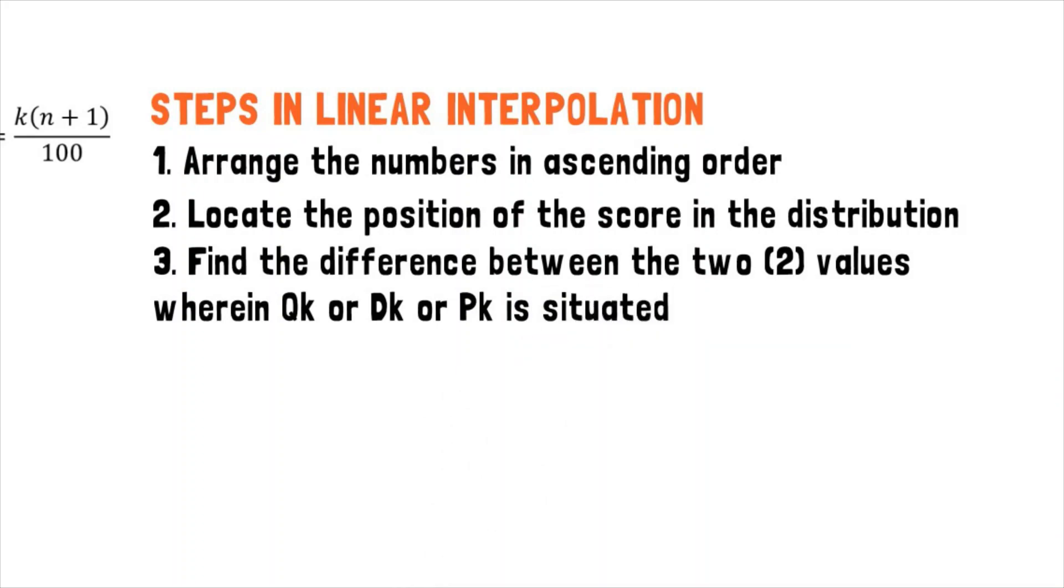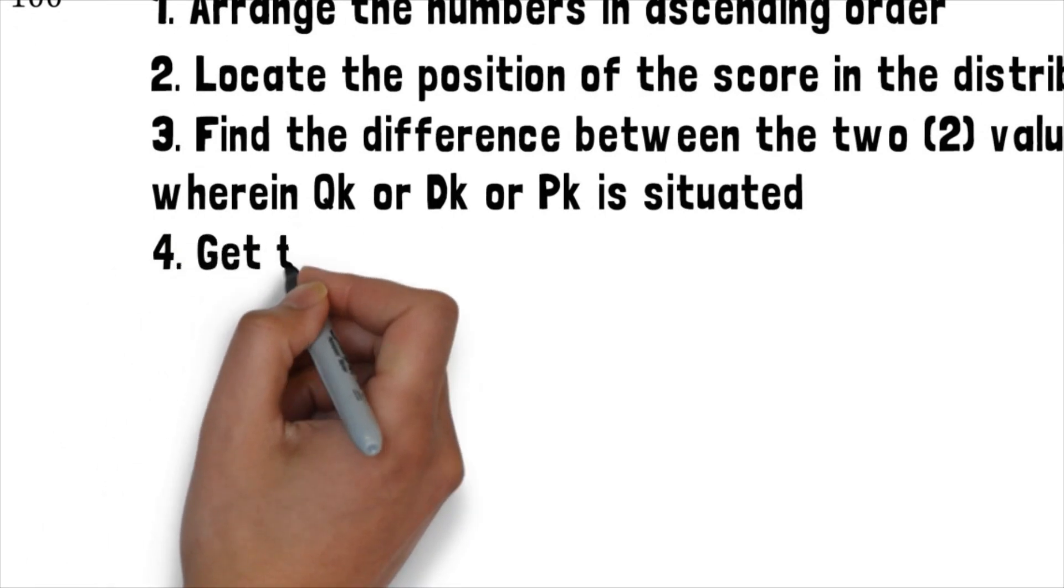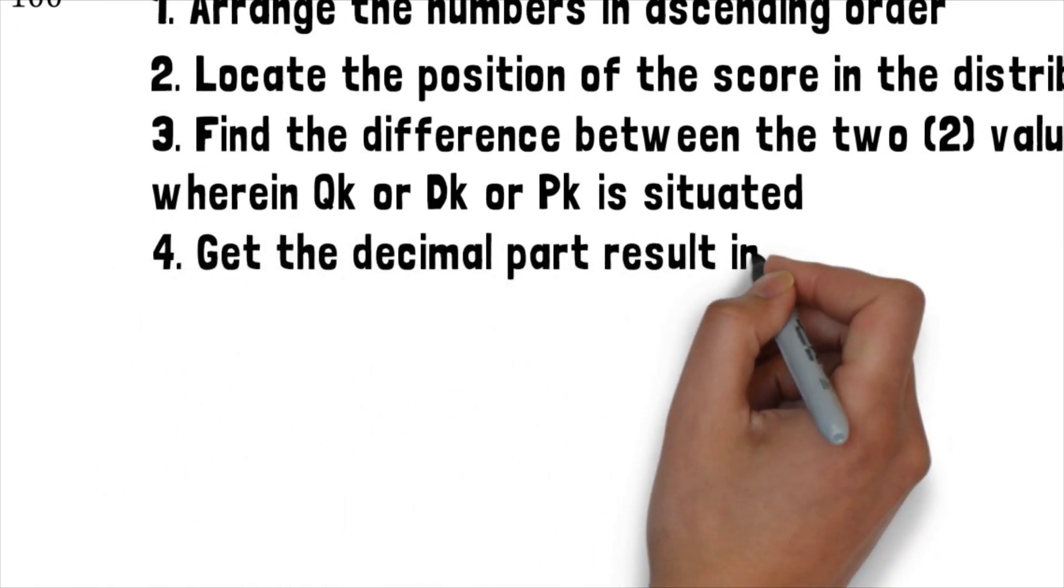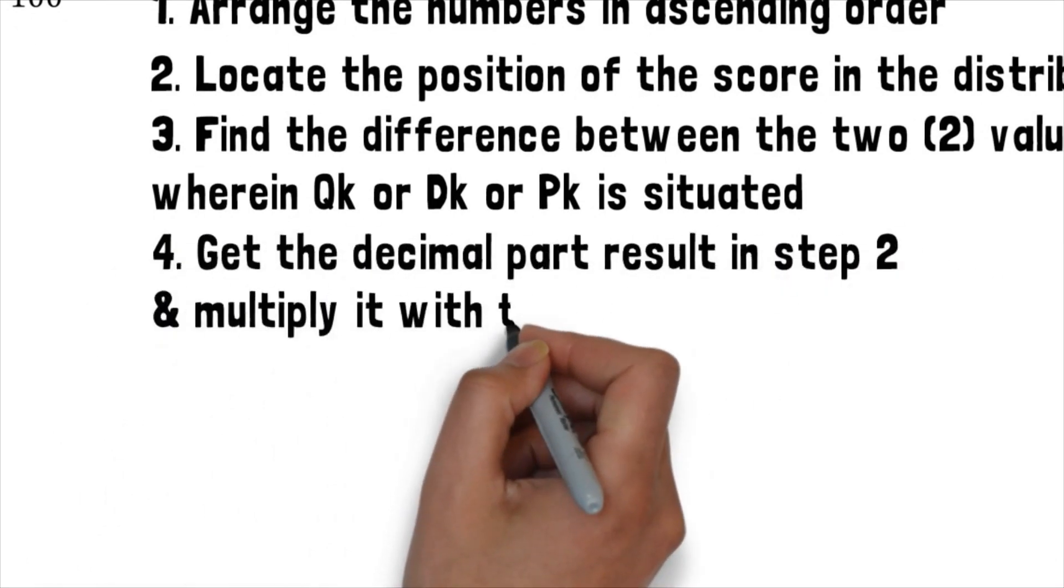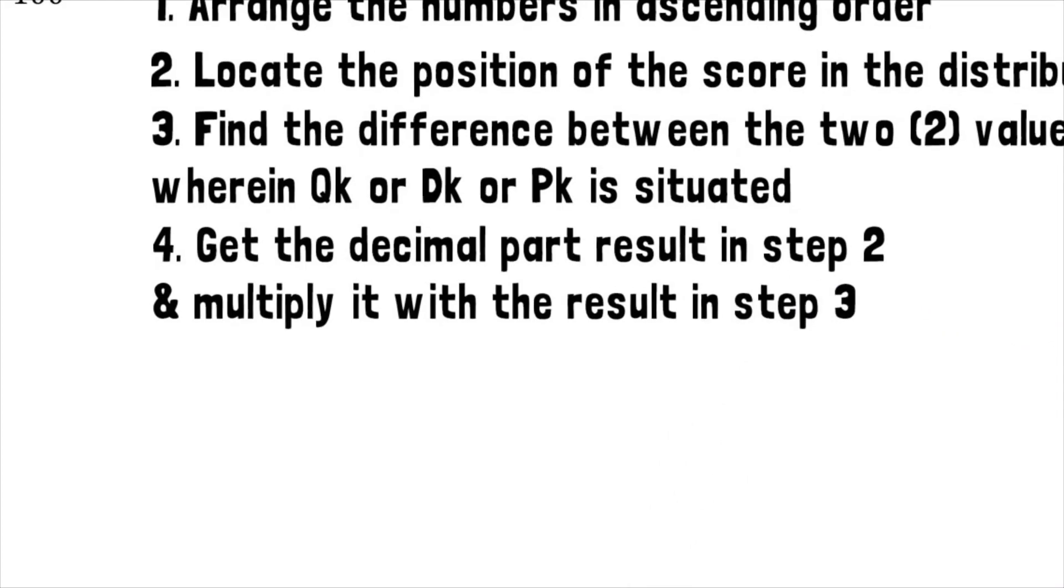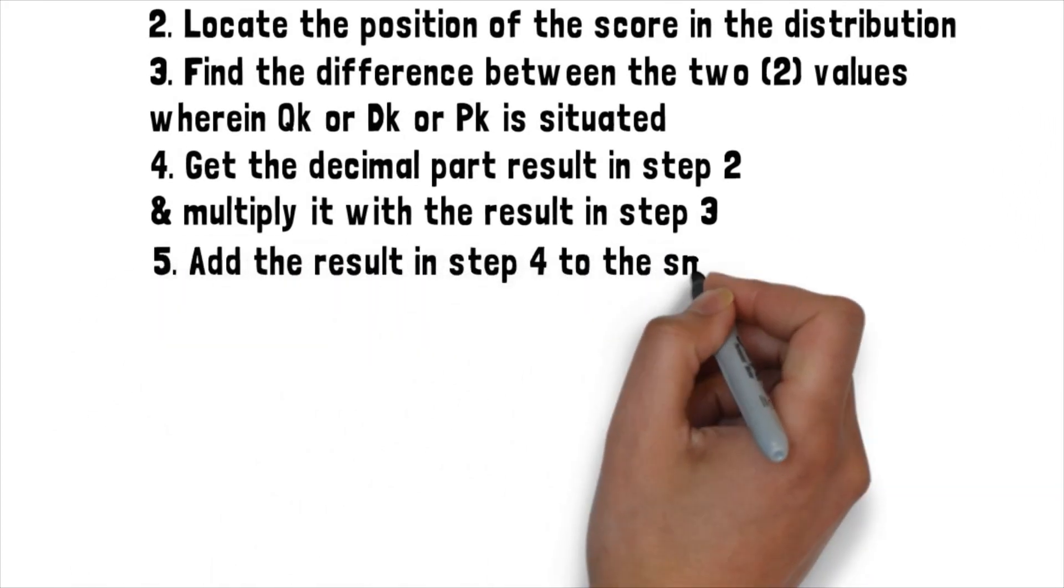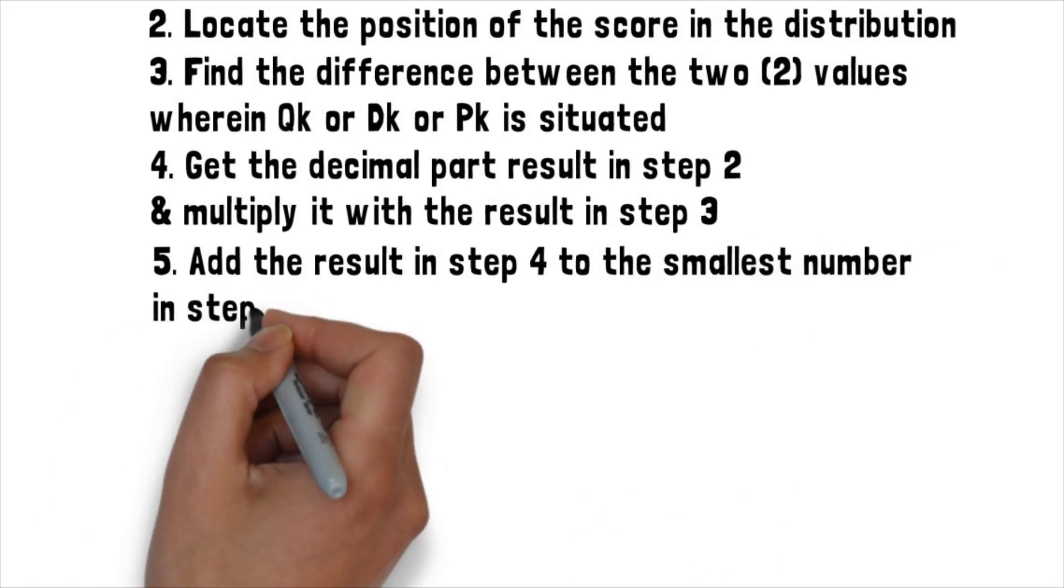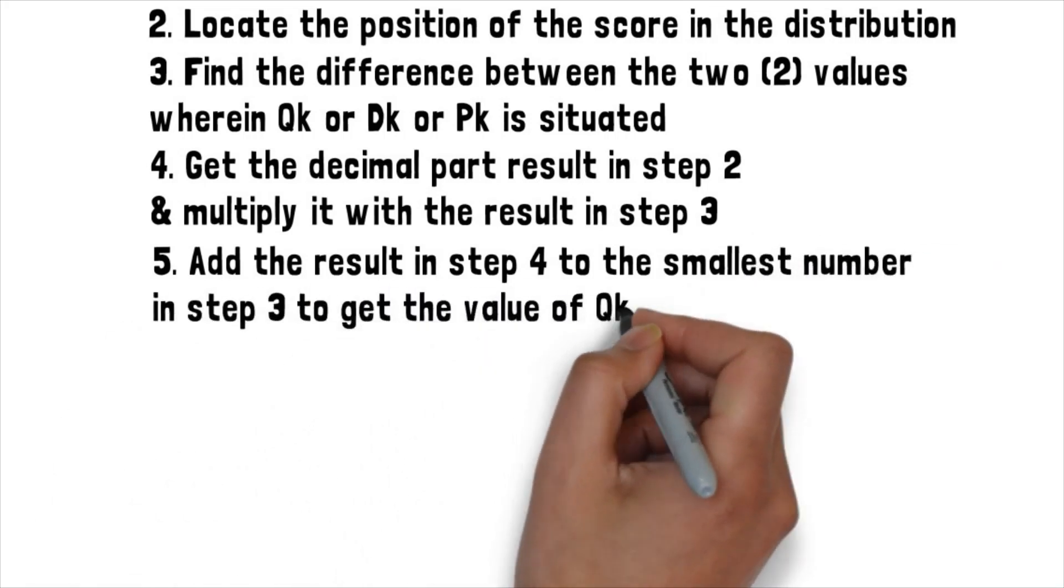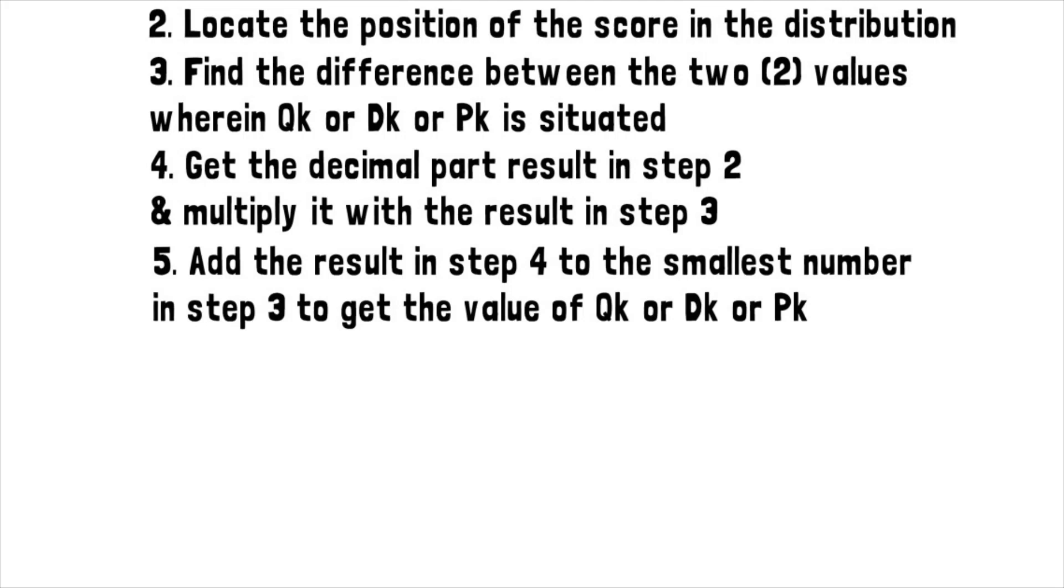After that is step 4 where we will get the decimal part result in step 2 and multiply it with the result in step 3. And lastly, we add the result of step 4 to the smallest number in step 3 to get the value of Q of k, D of k, or P of k.